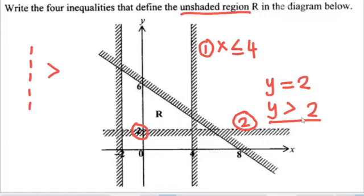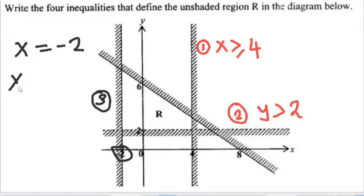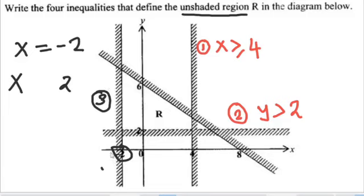So let us now answer for our line three. We said this is our line three, and this line three is passing on the x-axis on this point, negative two. So line three is passing on the point x is equal to negative two. We are going to write x, then we write negative two. Now what is the shaded part? The shaded part is on the left-hand side, and the unshaded part is on the right-hand side. So we need to describe the unshaded region. The shaded part has numbers less than negative two — numbers such as negative three, negative four, negative five.